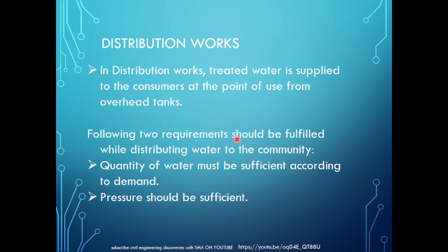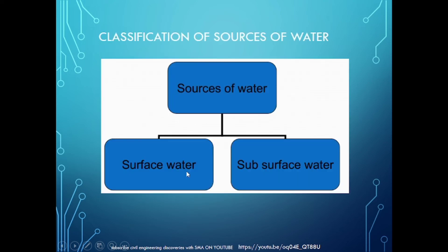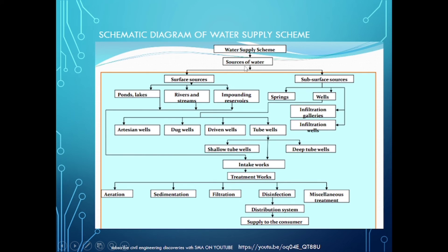Classification of sources of water: sources of water basically come from two different categories — surface sources and subsurface sources. This is shown in the schematic diagram of the water supply scheme. Surface sources include ponds, lakes, rivers, streams, and impounding reservoirs. Subsurface sources include infiltration galleries, dug wells, driven wells, and tube wells — both shallow and deep tube wells.